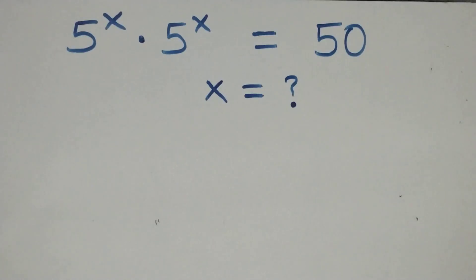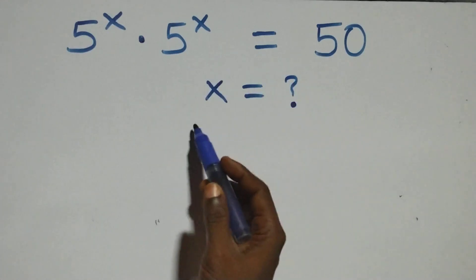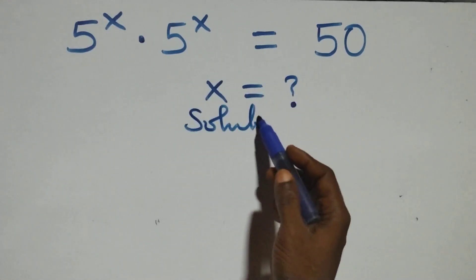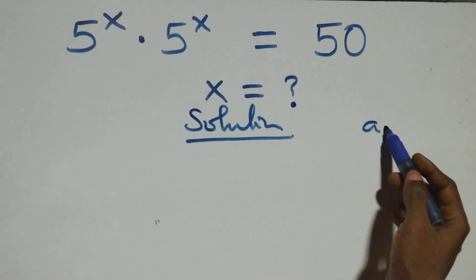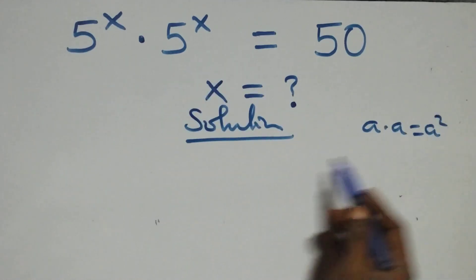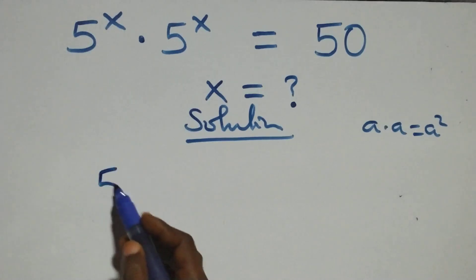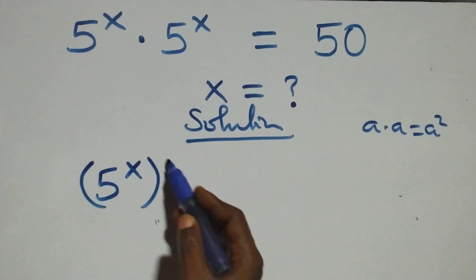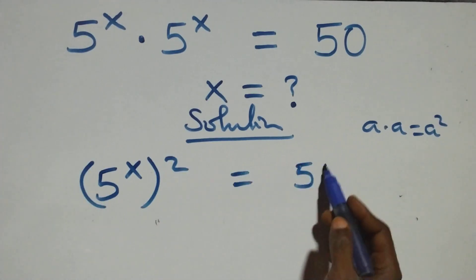Hello, you are welcome. We will solve this nice exponential equation. In this solution, we have a times a, which is the same thing as a squared. We write this as 5 raised to power x, squared, equals 50 on the right side.